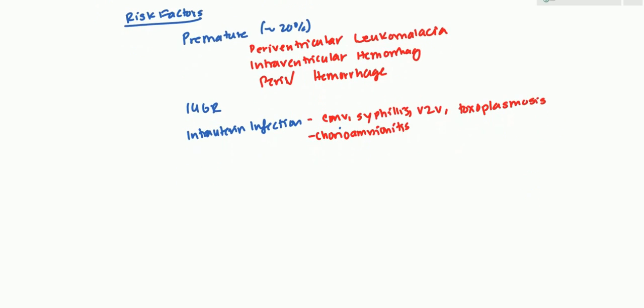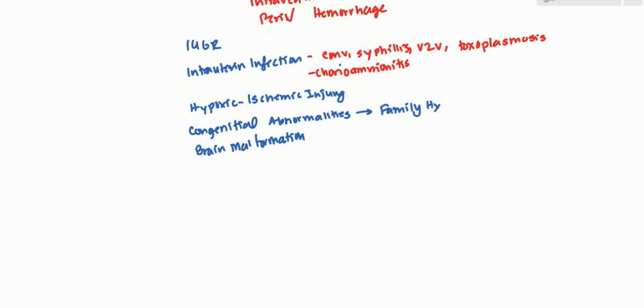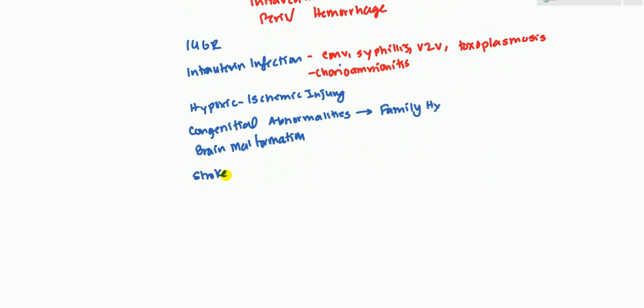After this, we have hypoxic ischemic injury. This is basically they get hypoxic during birth. And then they get brain ischemia which leads to cerebral palsy. Then we have congenital abnormalities. Many congenital abnormalities are associated with this. And this is also related to the fact that there are some genes that make it susceptible. And so family history has been shown to be a factor here. Specific congenital abnormalities is going to be brain malformation. Some specific brain malformations do have a high chance of becoming cerebral palsy.